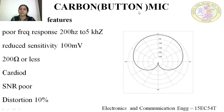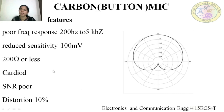Features of a carbon or button mic. The first feature is frequency response: carbon mic has poor frequency response, sensitive to sounds from 200 Hz to 5 kHz. Carbon microphones have reduced sensitivity of 100 mV. The output impedance is 200 ohm or less. The polar pattern of a carbon mic is cardioid, so these mics are sensitive to sound from the front direction only. The signal to noise ratio of a carbon mic is very poor. The distortion is very high, around 10 percent.